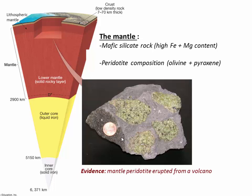Moving upwards and getting more relevant to our own lives is the mantle. The mantle is very different from the core — it is a silicate rock, something we might be familiar with seeing on Earth. It's a hard rock, rich in iron and magnesium, and the name of the rock is peridotite. It tends to be dominated by olivine and pyroxene minerals. These green pieces are samples of peridotite that were actually erupted by a volcano, embedded in a matrix of basalt rock — essentially hand samples that came up through the plumbing of a volcano, meaning that volcano sampled pieces of the mantle for us.